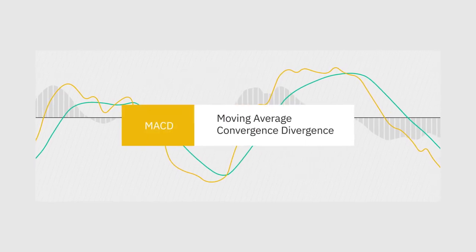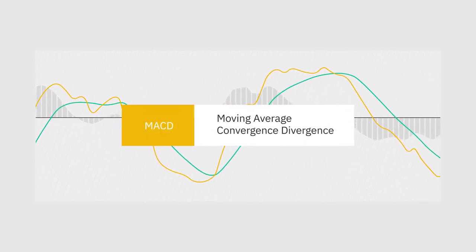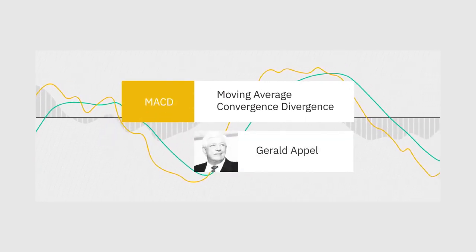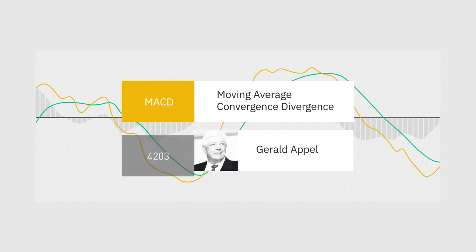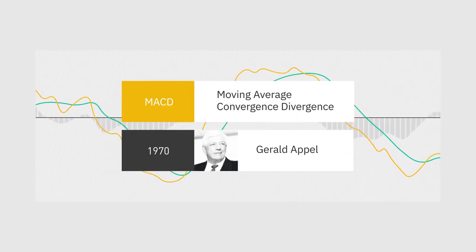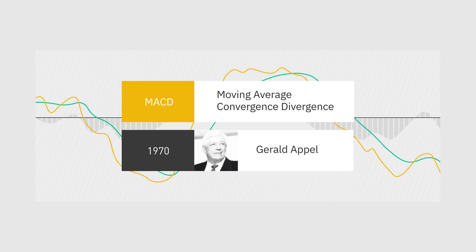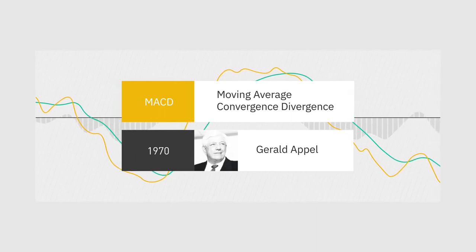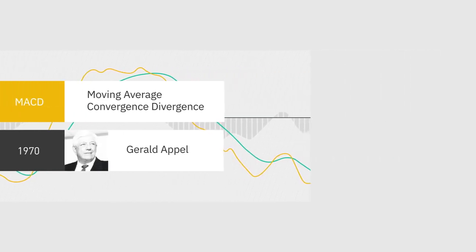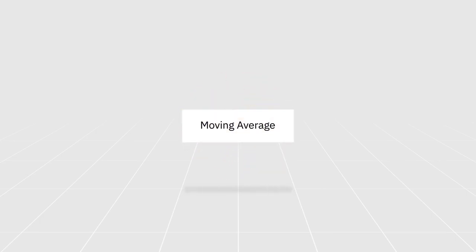MACD stands for Moving Average Convergence Divergence. Gerald Apple developed it in the late 1970s as a tool that utilizes moving averages to determine the momentum of an asset. Before diving into the mechanisms of MACD, it is essential to understand the concept of moving averages.